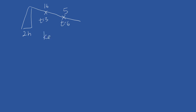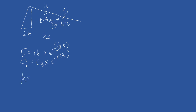Using the equation: 5 equals 16 times e^(−ke × 3) — this is C6 equals C3 times e^(−ke × 3), where 3 is the interval between the two concentrations. Solving for ke gives 0.39. This is the first answer.